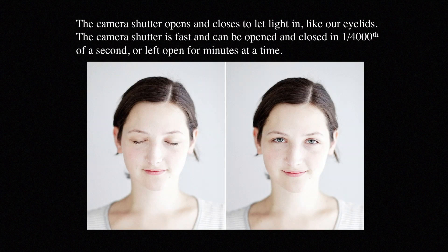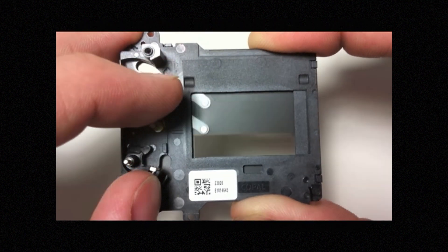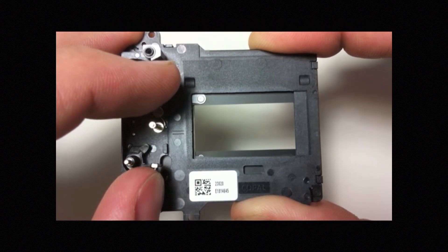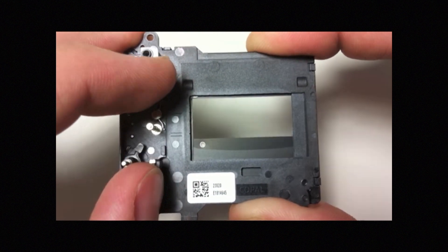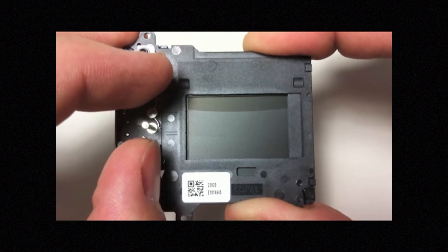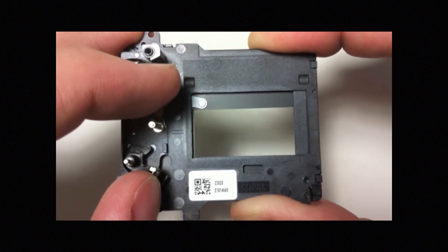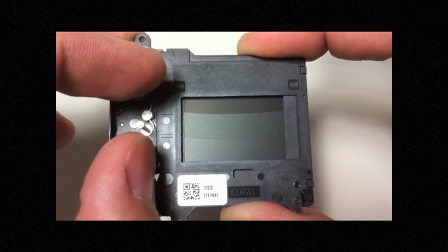The camera shutter opens and closes to let light in, like our eyelids. The fastest we can open and close our eyes is about a twentieth of a second, but the camera shutter is much faster. It can be opened and closed in a four-thousandth of a second, or left open for minutes at a time.